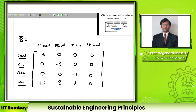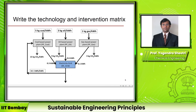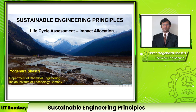An important point: when writing the technology and environmental intervention matrices, the functional unit is not yet needed. Matrices A and B are independent of the functional unit, so they can be used for any given functional unit. This was another example reinforcing the matrix approach for inventory calculation.